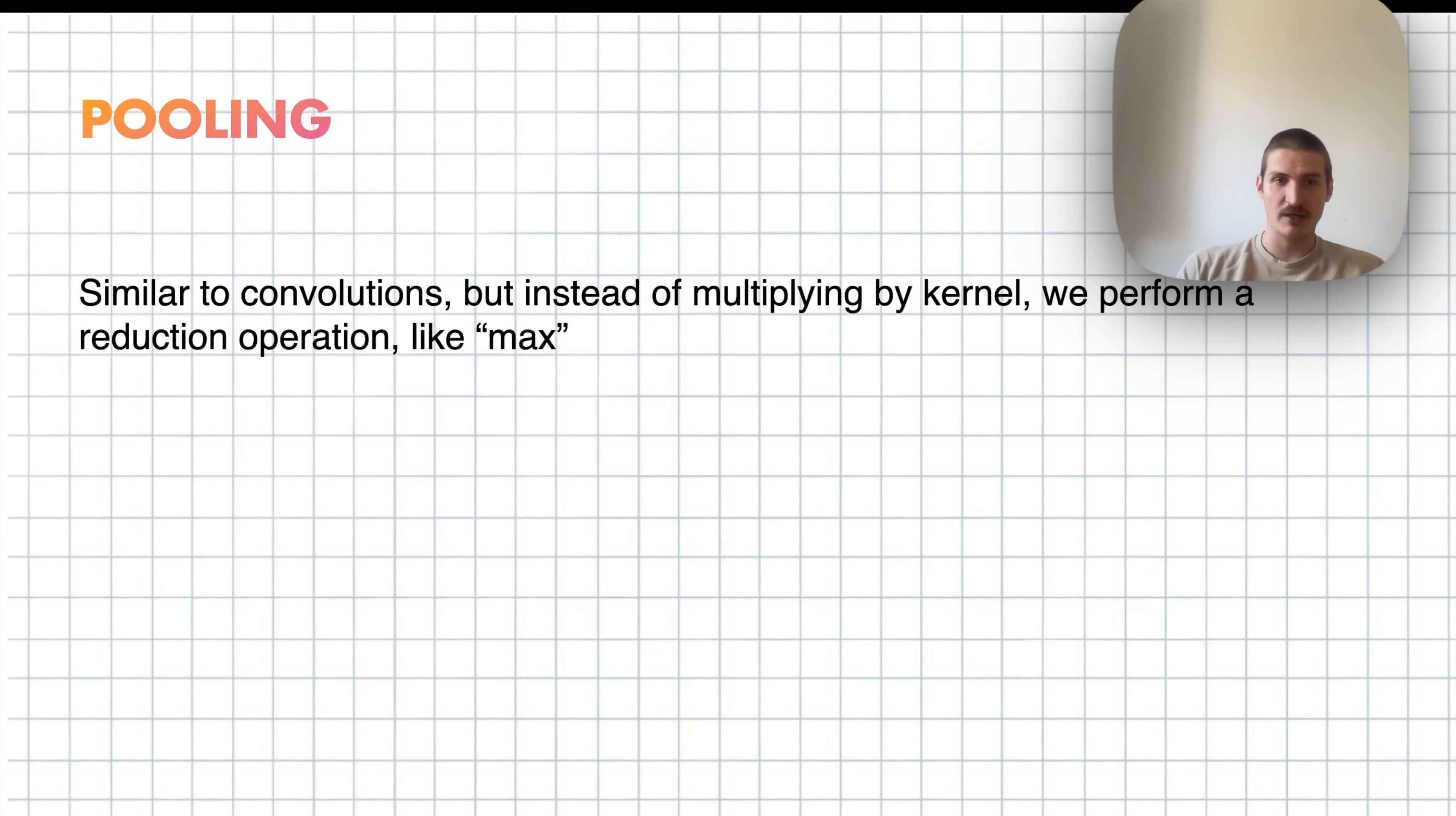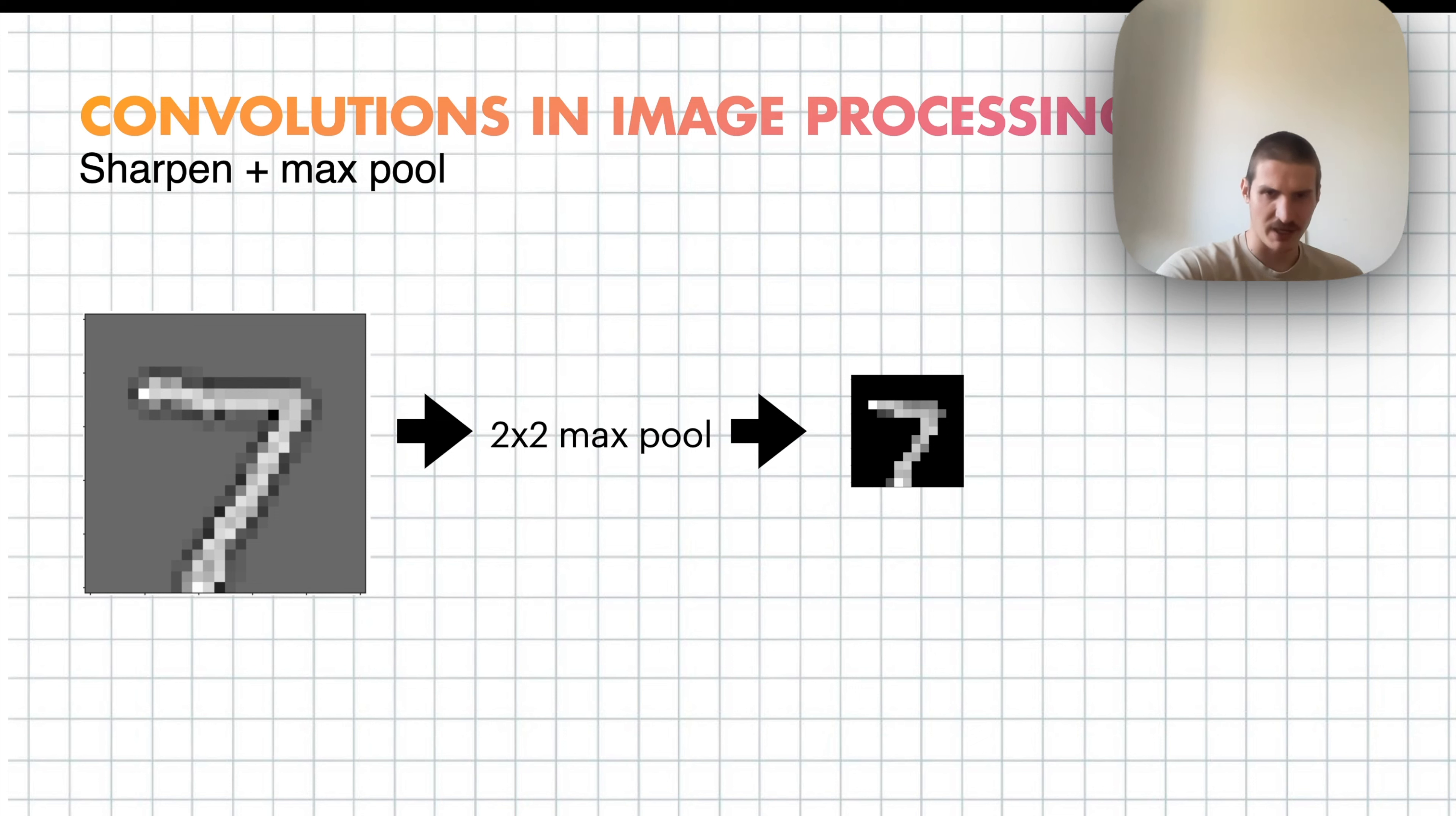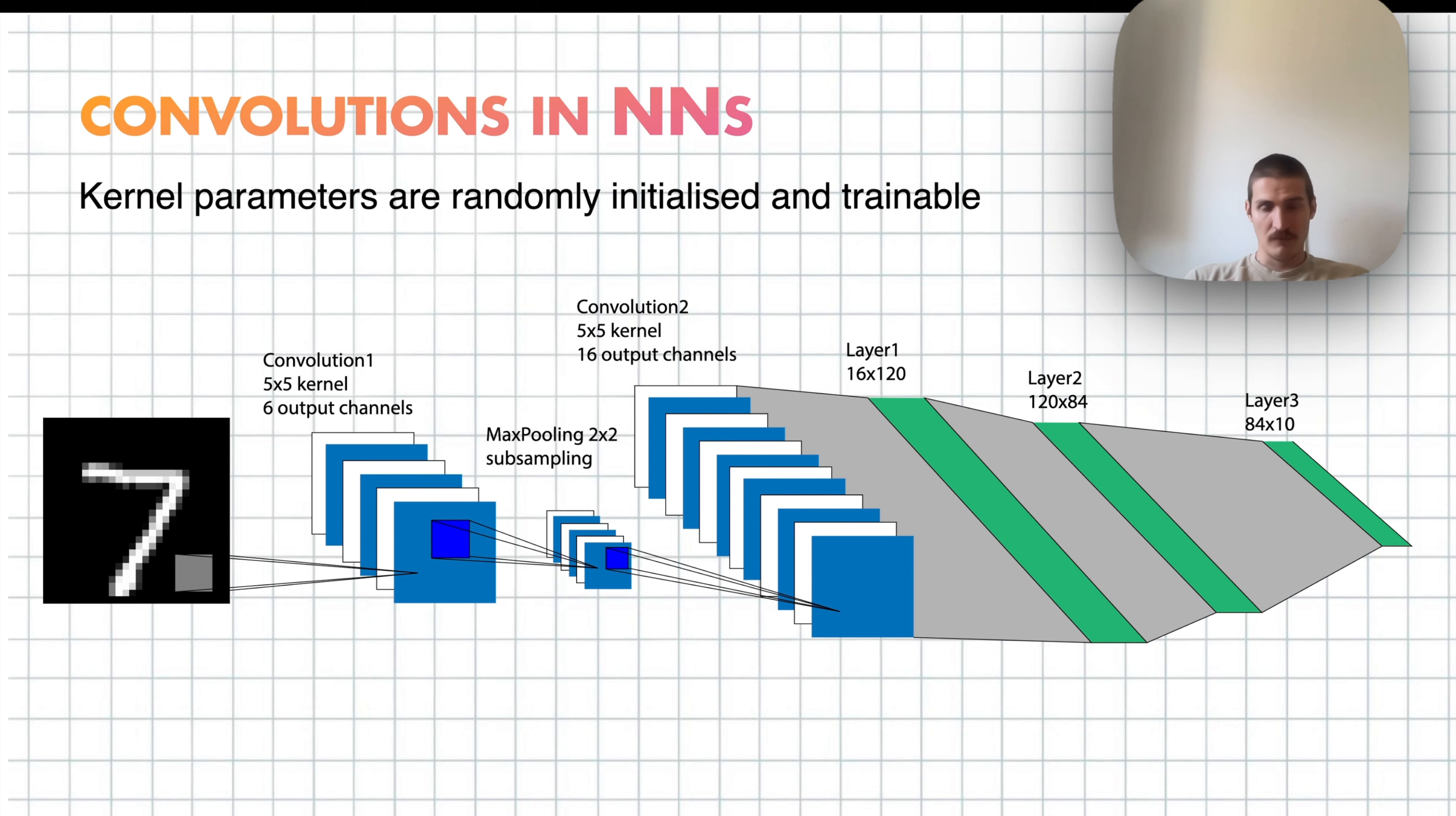And then again, apart from convolutions, there is a thing called pooling, like max pooling, which is basically instead of multiplying every coordinate by the corresponding coordinate in a kernel, we just take a max of all four of them, for example. And this is called max pooling. And here is example on our dataset, right? So we can start with the sharpen kernel, which sort of makes the picture look like this. Then we apply max pooling with stride two, which shrinks the image quite significantly. But as you can see, it still looks almost exactly the same, number seven. So that was about convolutions in general in image processing.